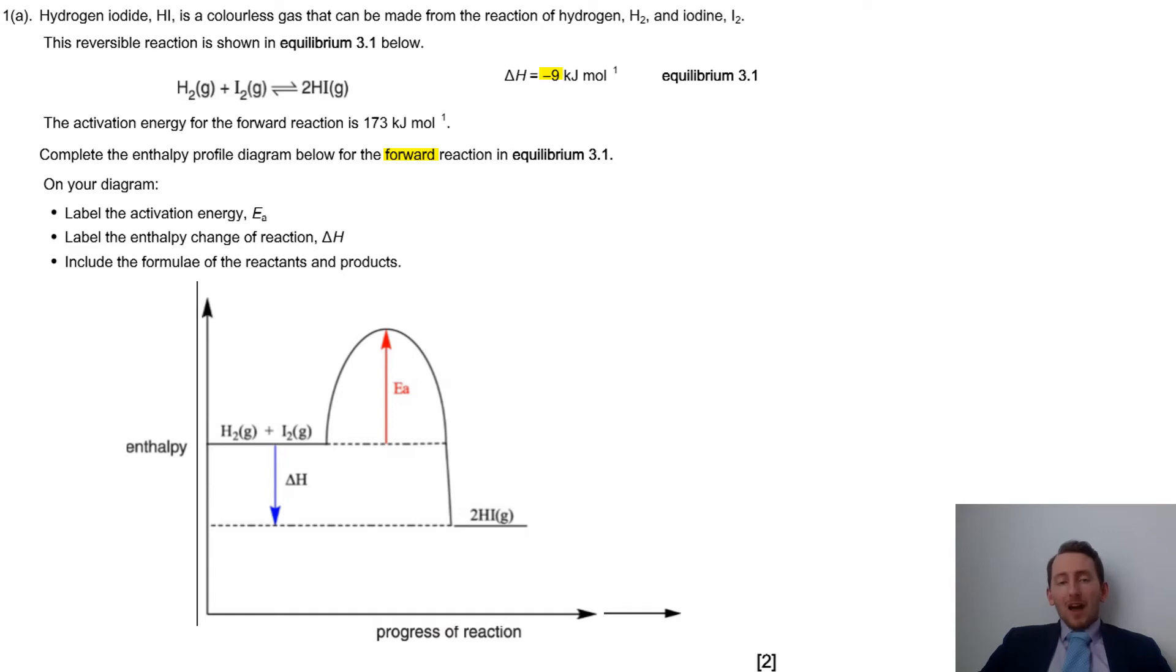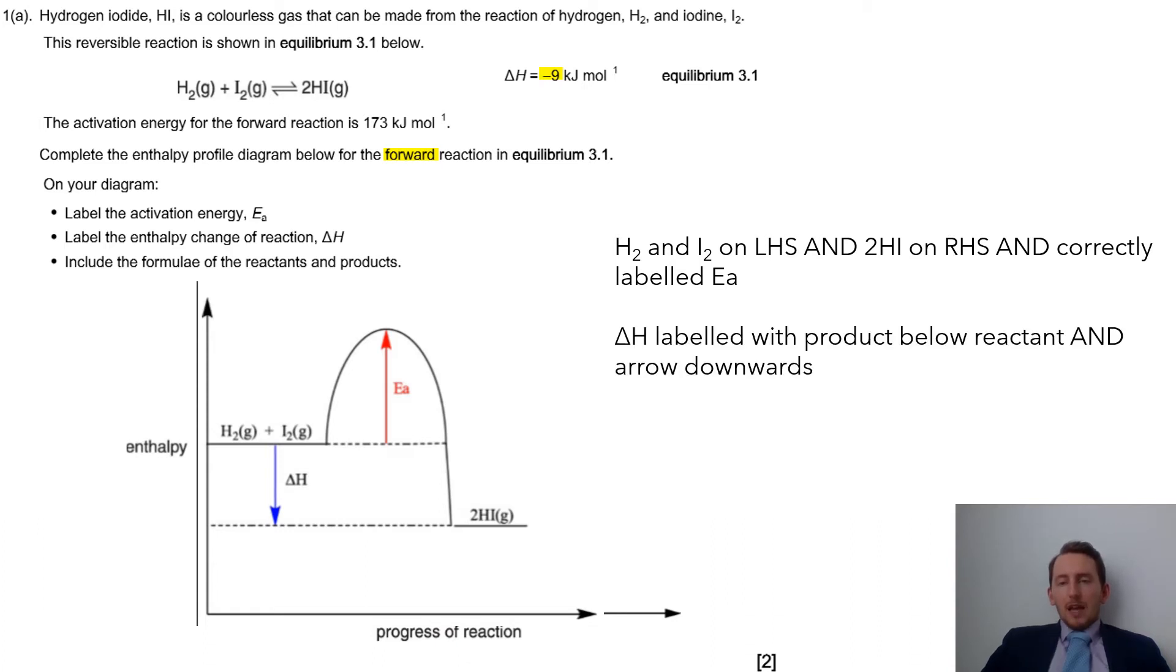We've got to make sure we have our H2 gas and our I2 gas from our equation at the top there. We can have that for our reactants. And then we also have our 2HI gas as a product. We have our activation energy labelled as EA. We have our delta H value added there as well. So that should all be good. So there are the marking points there, quickly labelled.